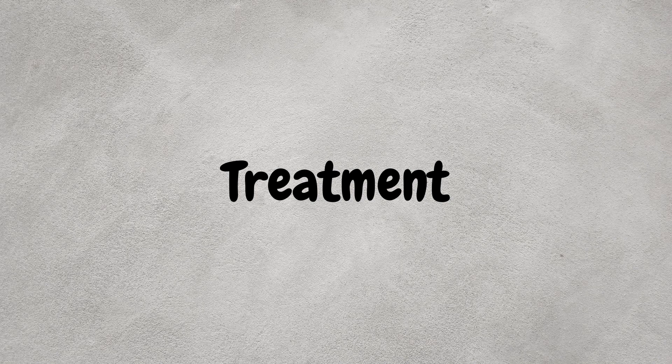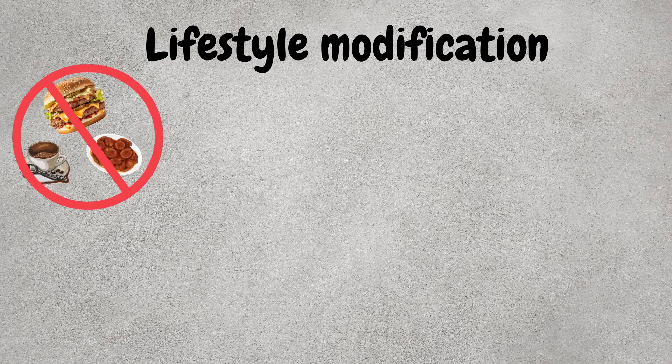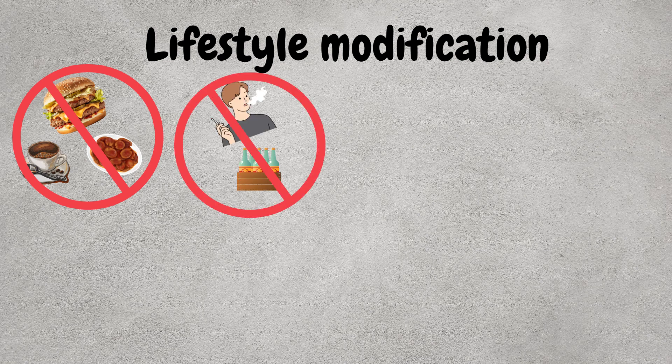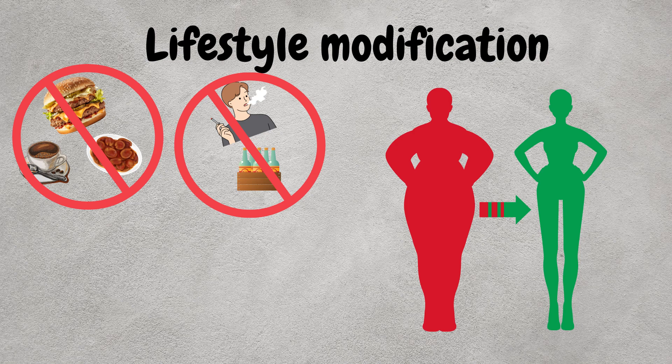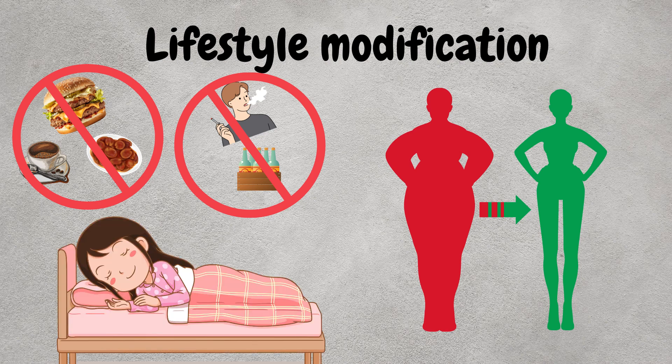Now let us explore the available treatment options for Barrett's esophagus. Number one is lifestyle modification. Lifestyle changes can help alleviate the symptoms of GERD and reduce the risk of Barrett's esophagus progression. These include dietary modification — avoiding triggering foods such as spicy, acidic, and fatty foods — and eating in small quantities but with more frequent meals. Then quitting smoking and alcohol, achieving and maintaining a healthy weight to reduce pressure on the stomach, and sleeping with the head raised to help prevent stomach acid from refluxing into the esophagus during sleep.